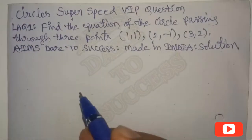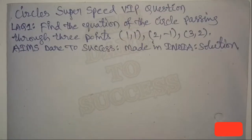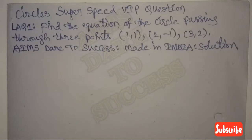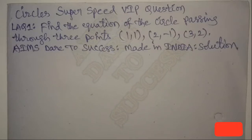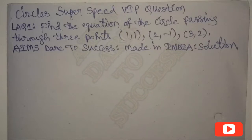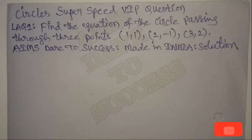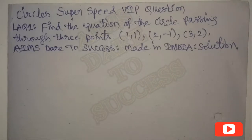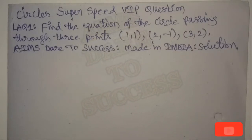Hi, Hello, Namaste, my dear students and friends. Today I came with a new trick and a new video: Circles Super Speed VIP Long Answer Question. The question is: find the equation of the circle passing through 3 points — (1,1), (2,-1), and (3,2). AIMS Dare to Success, Made in India. Solution: by using this method you will get one important long answer.